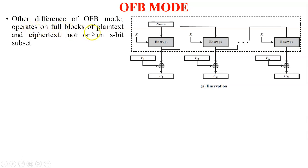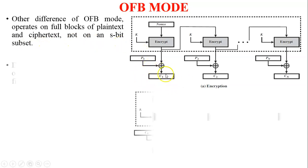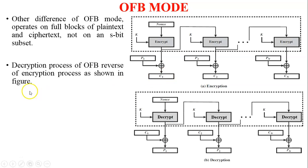Another difference: OFB mode operates on full blocks of plaintext and ciphertext, not on an S-bit subset. So C1 is a 64-bit block. The decryption process of OFB is the reverse of the encryption process, as shown in the figure.